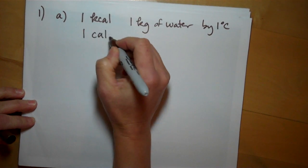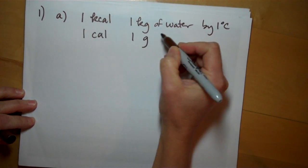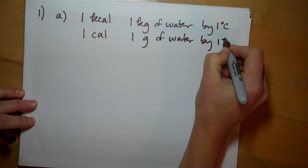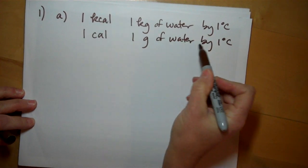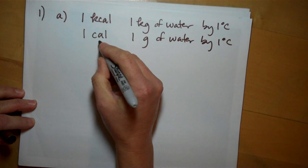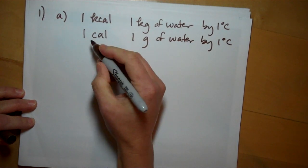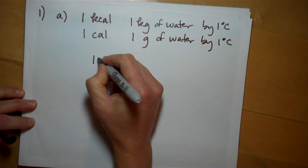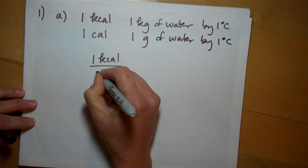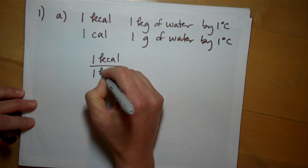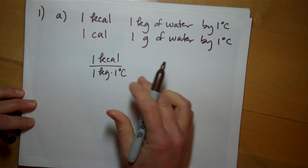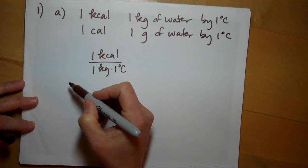The definition of a calorie is one calorie will raise one gram of water by one degree Celsius. The way you can write this given information is that one kilocalorie will raise one kilogram by one degree Celsius, similar to how you do specific heat in chemistry.